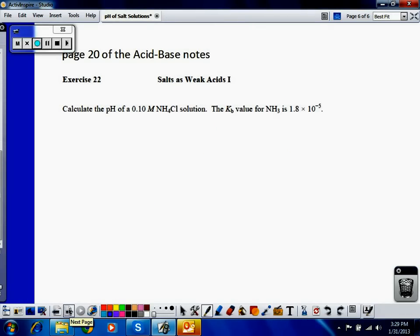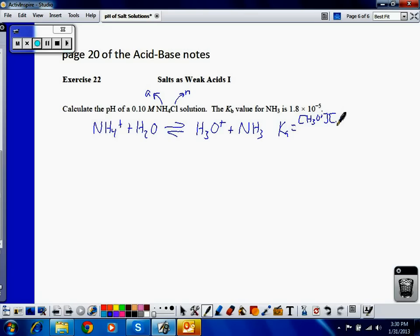I want the pH of an ammonium chloride solution. I have the Kb for ammonia. When I look at my solution, ammonium is going to be acidic because it's the conjugate acid of the weak base ammonia. Chloride is neutral. That means I'm going to write a Ka hydrolysis reaction. To write a Ka hydrolysis reaction, I have to produce H3O+. And then that means that I would get NH3.